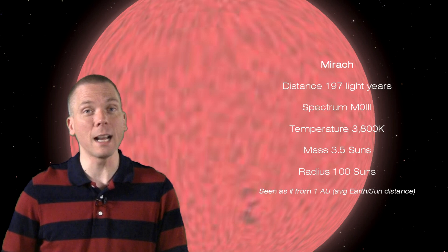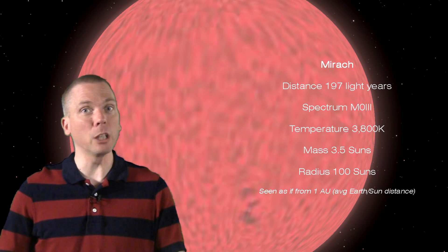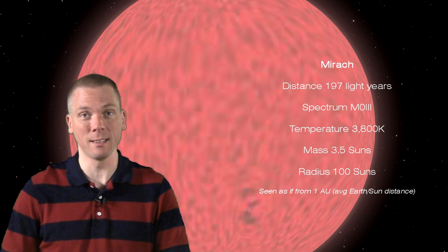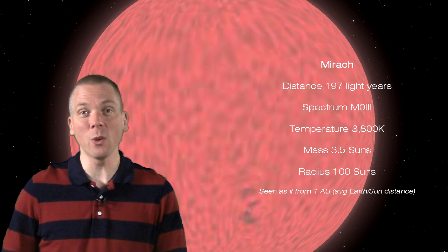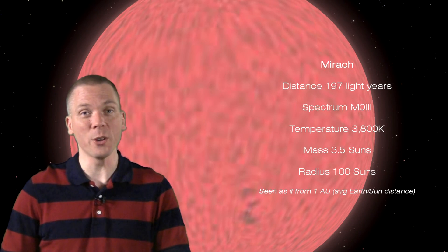But while Alpharatz was about three times the size of the sun, Myrach has bloated up to 100 times the sun's size, which is why it looks nearly as bright as Alpharatz, despite being located twice as far away at 197 light years. Look for the yellowish-orange color through a small telescope.